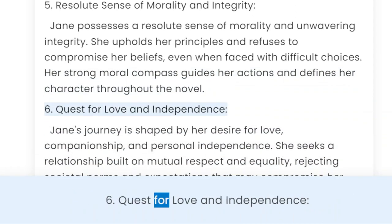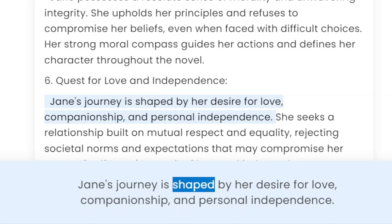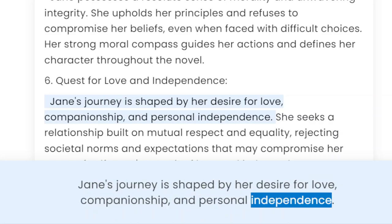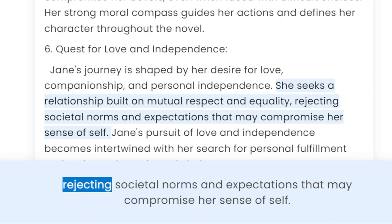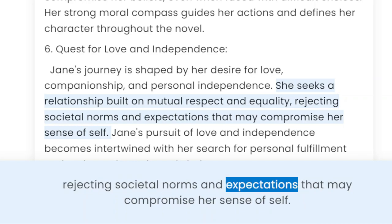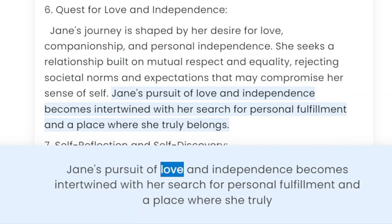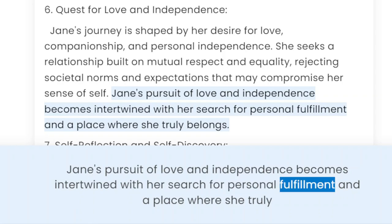6. Quest for Love and Independence. Jane's journey is shaped by her desire for love, companionship, and personal independence. She seeks a relationship built on mutual respect and equality, rejecting societal norms and expectations that may compromise her sense of self. Jane's pursuit of love and independence becomes intertwined with her search for personal fulfillment and a place where she truly belongs.